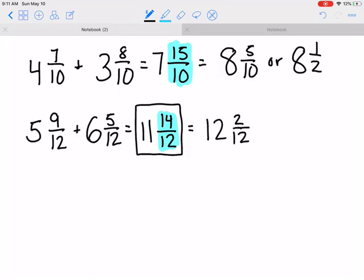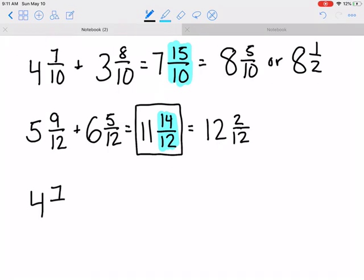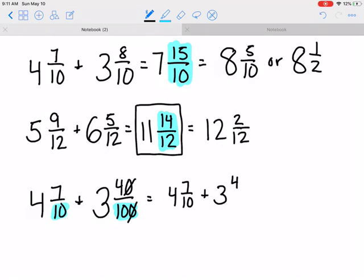Okay, last one. 4 and 7/10 plus 3 and 40/100. So now here's a two-step addition problem. The first thing we have to do is make these denominators the same. Remember you can't add fractions unless their denominators are the same. So I'm going to rewrite this problem and I'm going to change the hundredths to tenths. And remember you do that just by dividing by 10, so it's 100 divided by 10 would be 10, 40 divided by 10 would be 4.